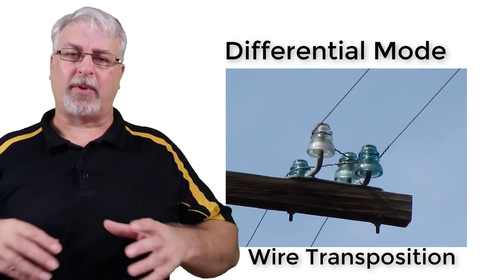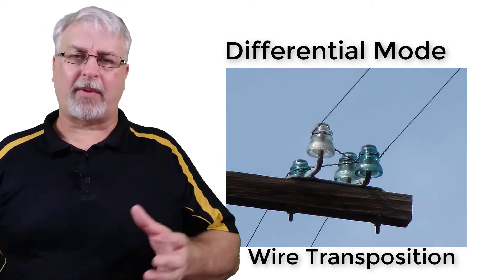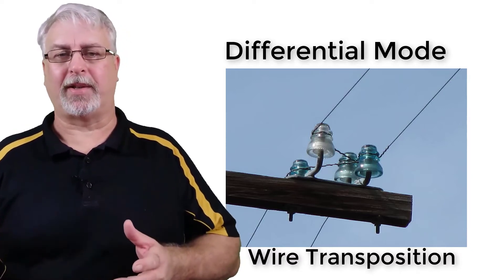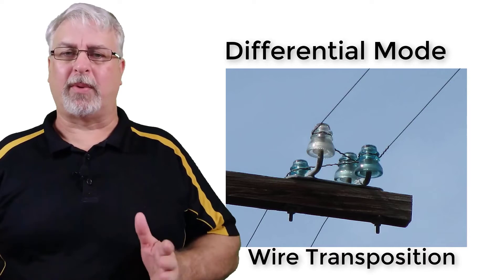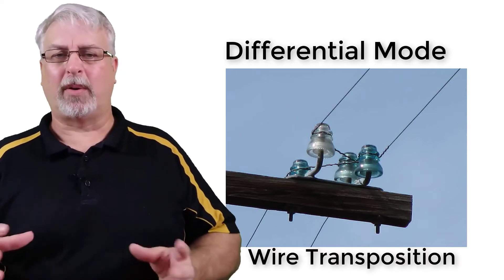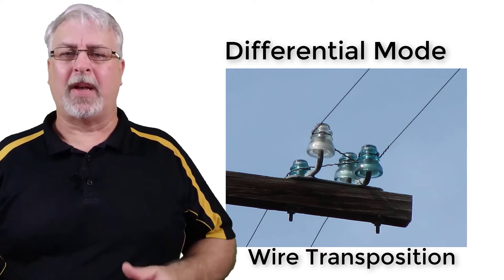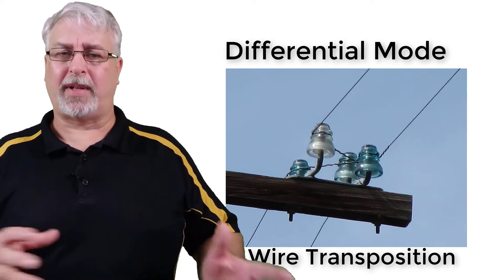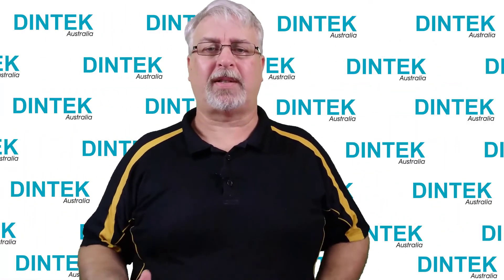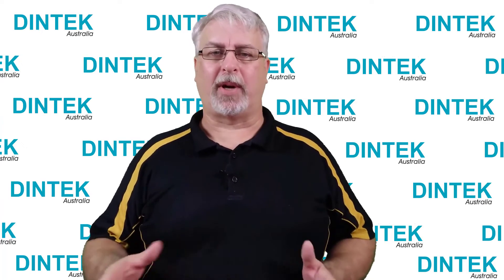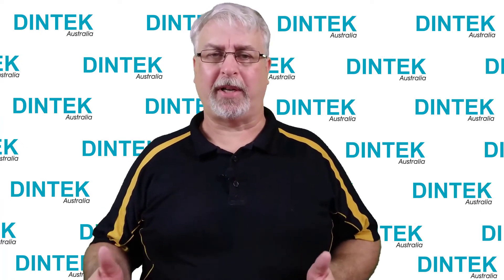So differential mode isn't rejecting the EMI as such, but rather accepting it and using it against itself. Remember, we're not concerned with the voltage level as such, what we're looking for is any voltage change. As long as the voltage stays the same as what we started with, the data gets through. So that's a little bit about differential mode and how it works to keep EMI out of our UTP cables.